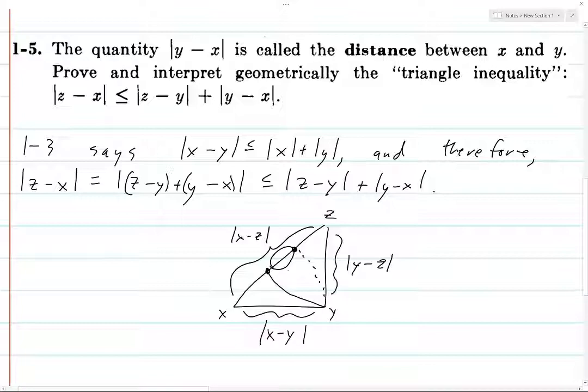That's not a very clear explanation, but visually it should be clear that for a triangle, the sum of the side lengths of the two sides is always greater than or equal to the length of the hypotenuse.